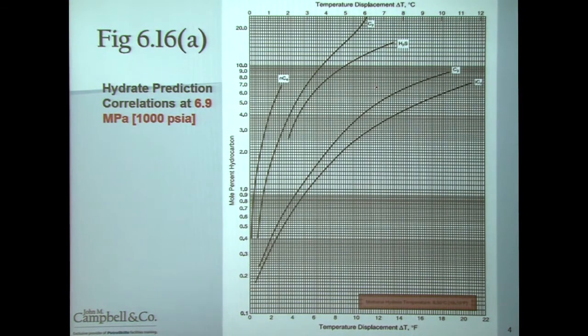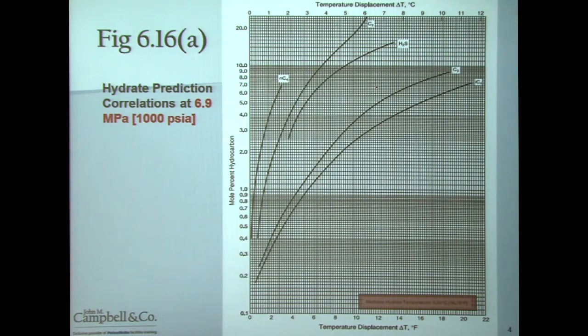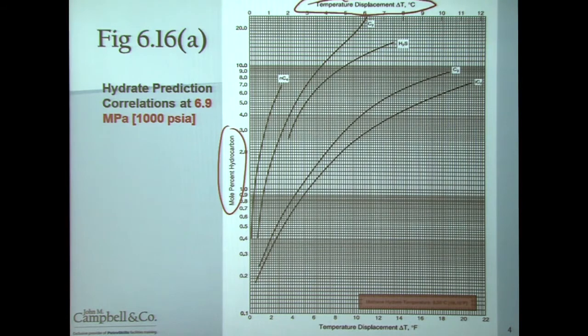The approach is called the Treckle-Campbell method, and what we do is use charts in order to help us determine the location of the hydrate formation temperature curve. Here we see one chart that plots the mole percent of hydrocarbons versus a temperature displacement, and the parameters include various components: normal butane, ethane, hydrogen sulfide, propane, and isobutane.